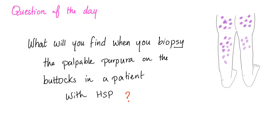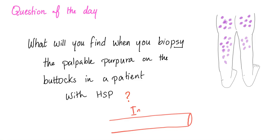First, let me answer the question from last video: what will you find when you biopsy the palpable purpura on the buttocks in a patient with Henoch-Schönlein Purpura? You'll find small blood vessels in the skin, and these blood vessels will have, believe it or not, IgA deposition. Because this is a disease where the young child has IgA nephropathy — IgA antibodies destroying the kid's kidney and skin, specifically the vessels of the kidney and the vessels of the skin. That's why it's a vasculitis, and once you see that on biopsy, you have your diagnosis.